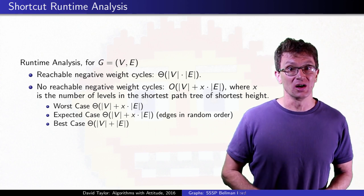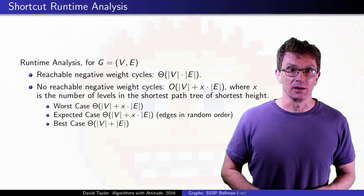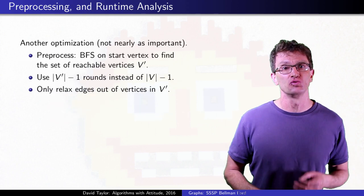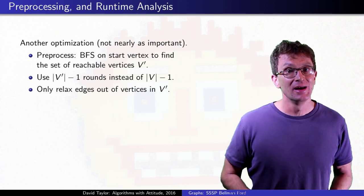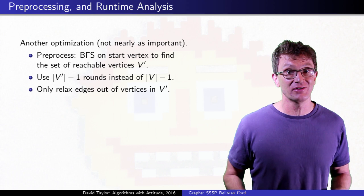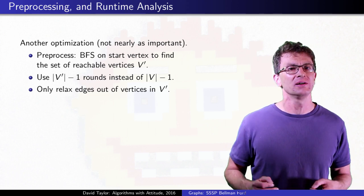I can think of one more shortcut you might or might not want to make. Every now and then, you might get a graph where only a small part of the graph is reachable from the start vertex. In that case, each time you go through all of the edges to relax them, you are relaxing some edges that aren't even reachable.